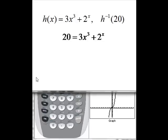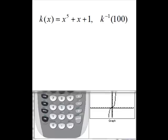So when we go to write up our solution, we can actually say h inverse of 20 is about 1.7685. We use the squiggly equals because it's not exactly equal because we did round that answer off. Let's do the same thing with the next problem. k of x equals x to the fifth plus x plus 1. A fifth degree polynomial is not a trivial function to find an inverse function for.